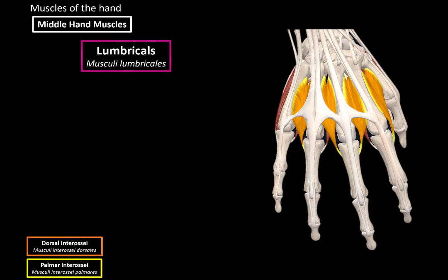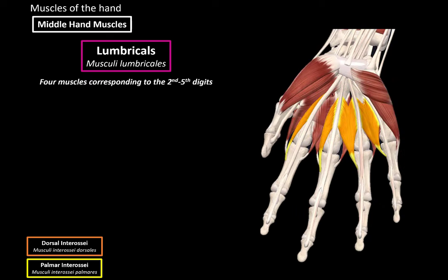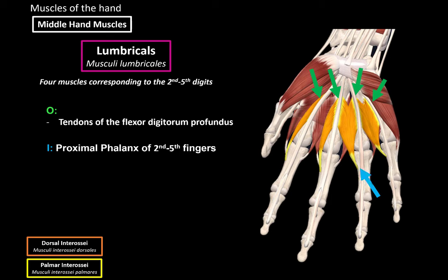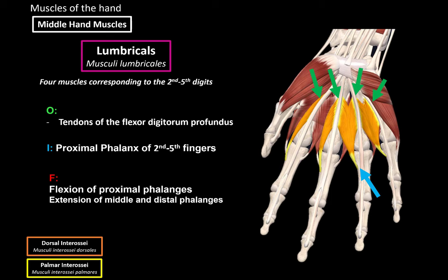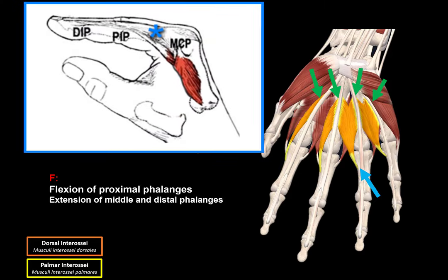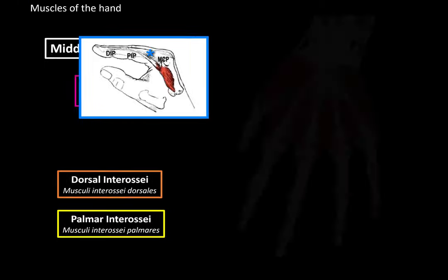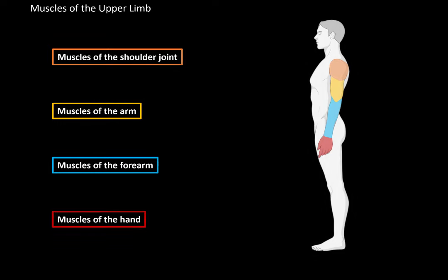Then we have a system of muscles called the Lumbricals. These are four muscles that correspond to the second to fifth fingers. They all originate from the tendons of the Flexor Digitorum Profundus, and they insert at the proximal phalanx of the second to fifth fingers. The lumbricals are a very practical muscle, because they give our fingers the ability to flex the proximal phalanx while extending the middle and distal phalanges. And with that, we have covered all the muscles of the upper limb.